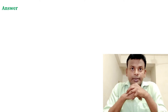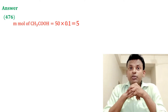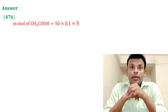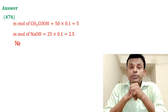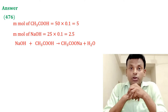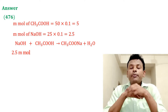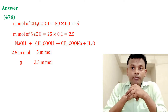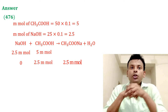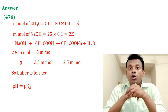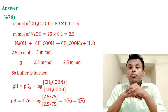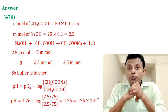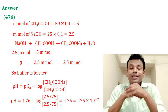Answer is 476. Millimoles of acetic acid = 50 × 0.1 = 5; millimoles of NaOH = 25 × 0.1 = 2.5. NaOH plus CH3COOH gives CH3COONa plus H2O. At equilibrium: 2.5 mmol CH3COONa and 2.5 mmol CH3COOH remain — a buffer. pH equals pKa plus log([CH3COONa]/[CH3COOH]) = 4.74 + log(1) = 4.76 = 476 × 10 to the power minus 2. Answer is 476.